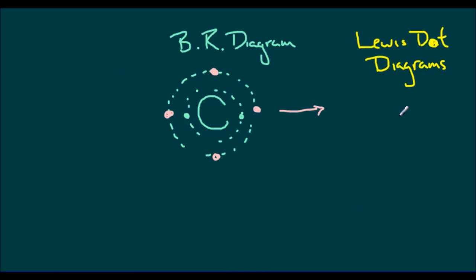What Lewis dot diagrams were, if you remember, were little diagrams that showed us only the valence electrons. So we didn't have to worry about the electrons in the inner shells, only the outer shells.